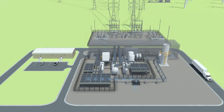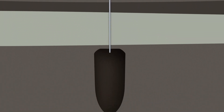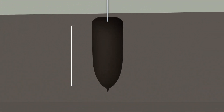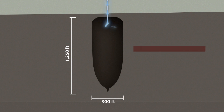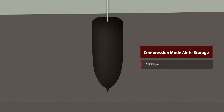The compressed air is then pumped into a massive cavern, large enough to house the Empire State Building. The process of filling the cavern is called compression mode. At full charge, the cavern air pressure can reach up to 2,800 pounds per square inch.